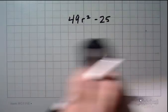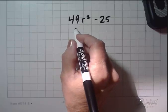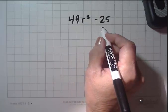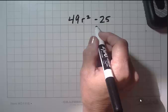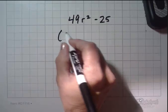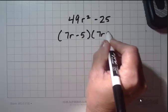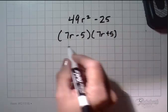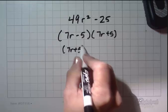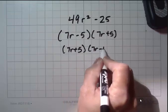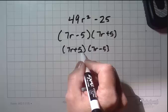Better to recognize that 49 is a perfect square, 7 times 7. 25 is a perfect square, 5 times 5. And there's a negative sign in between them, so you're fine. So it's 7r minus 5, 7r plus 5. And just so you know, it doesn't matter which one comes first. As long as each set of parentheses, one has a minus and one has a plus.